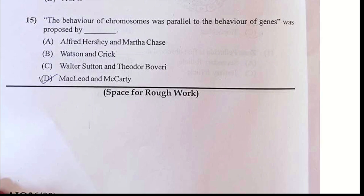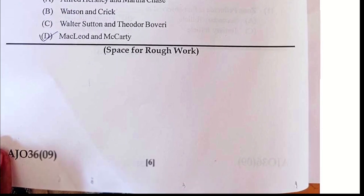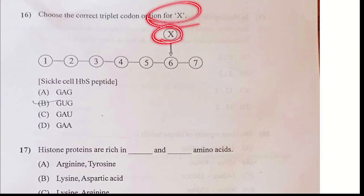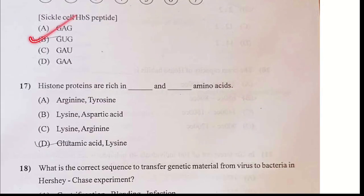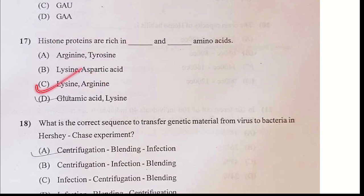Question 15 — the answer should be C. Now look at the next MCQ. X is called here — you can see HBS, what this is called — GUG. The answer should be D. This is the protein which contains Lysine and Arginine. The answer is C.